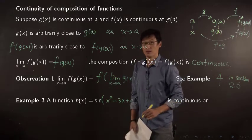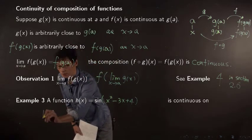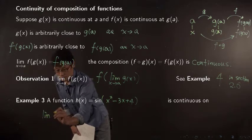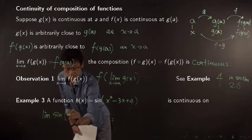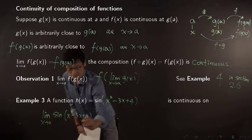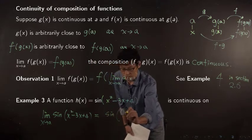Limit of sin of x squared minus 3x plus 4 when x approaches a. This is sin of the limit,